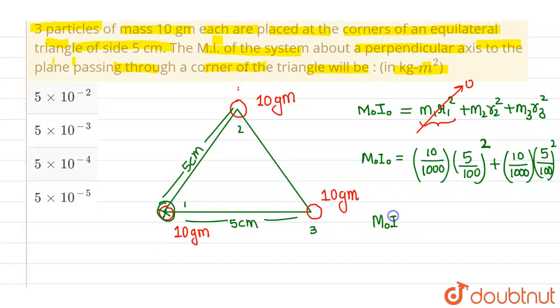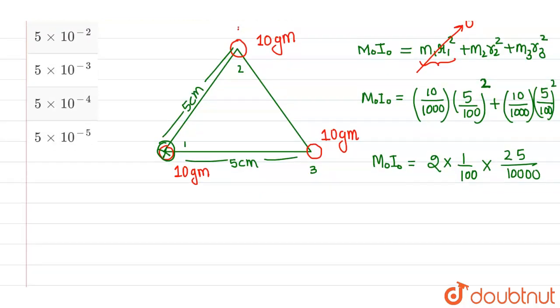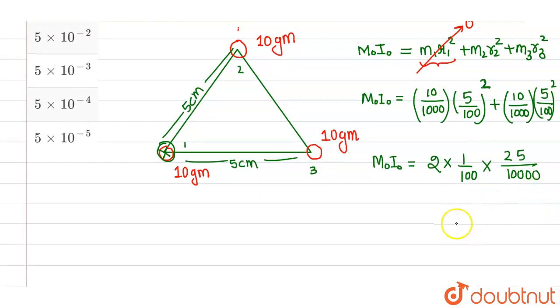So what I will be getting, I will be getting moment of inertia as 2 times 1/100 times 25 divided by 10 raised to power 4.